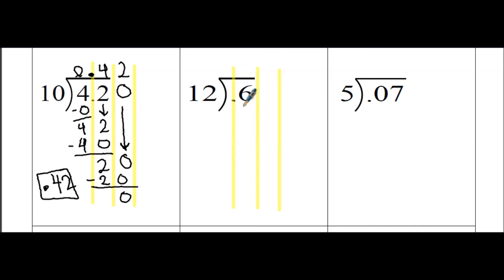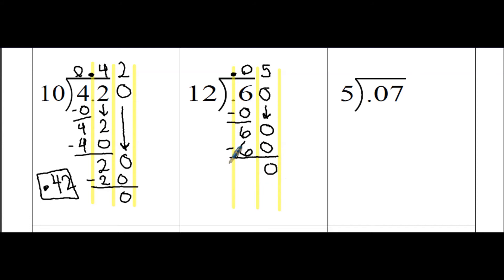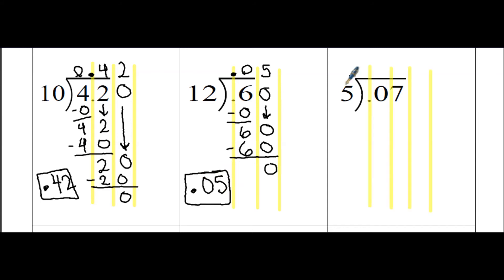12 is a whole number, so we don't need to move the decimal — just bring it up in our answer. 12 goes into 6 zero times with 6 left over. We write in a place holder of 0 and bring it down. 12 goes into 60 five times, and 5 times 12 gives 60 exactly with 0 left over. Once 0 is left over and there are no other empty spots in the answer, we're done dividing. So 0.05, or 5 hundredths, is your final answer.